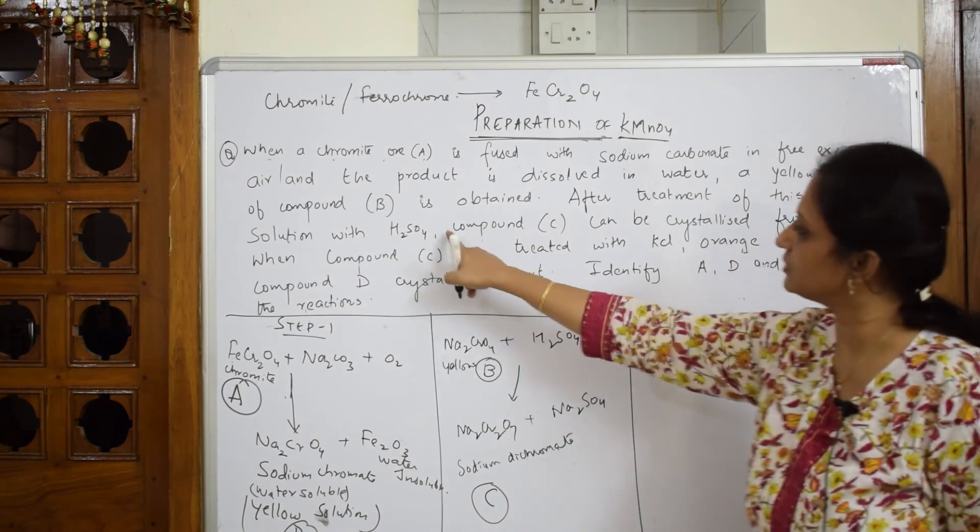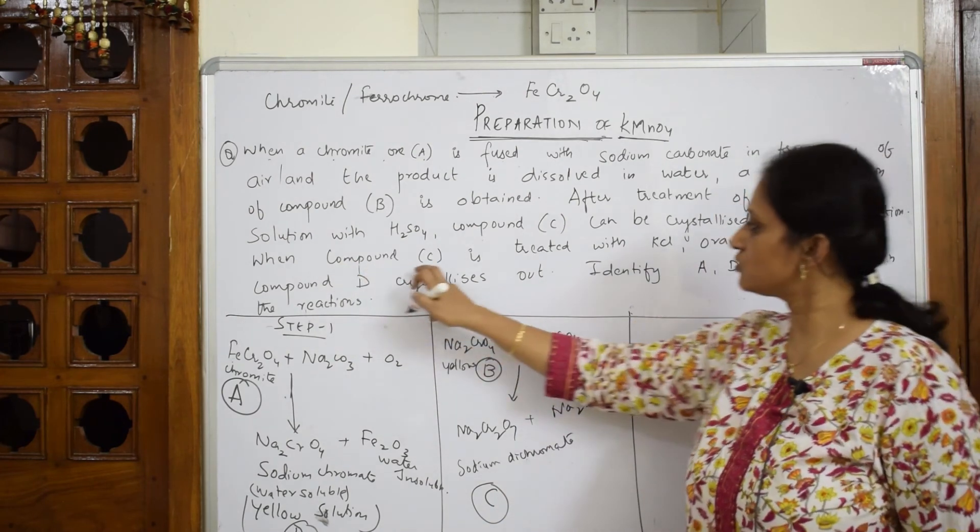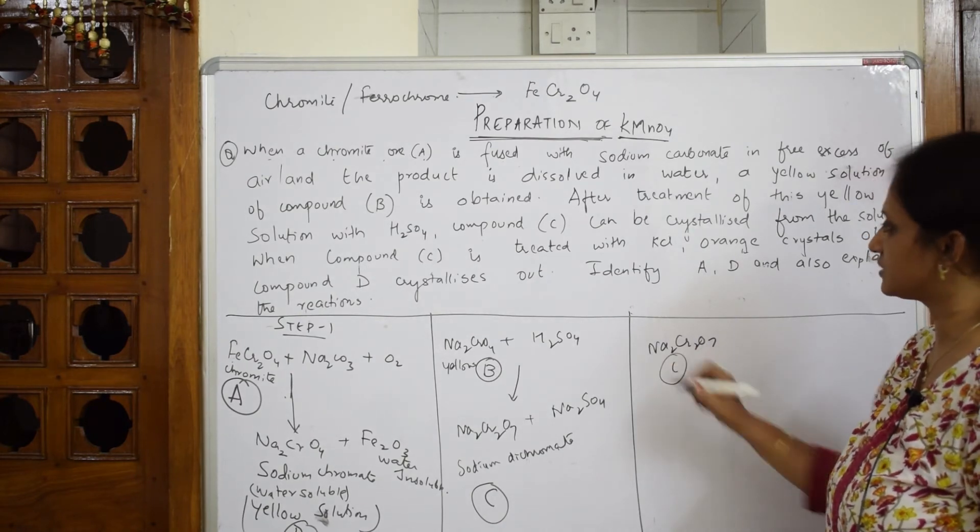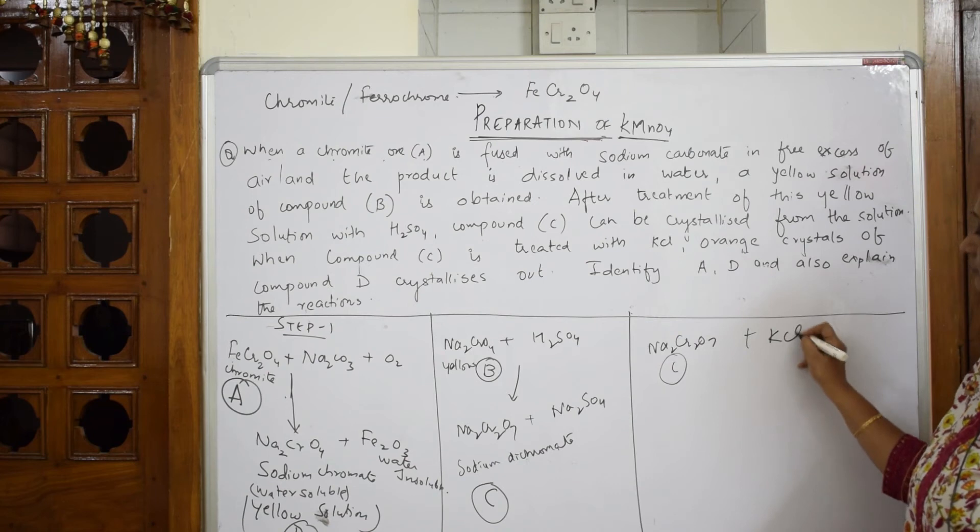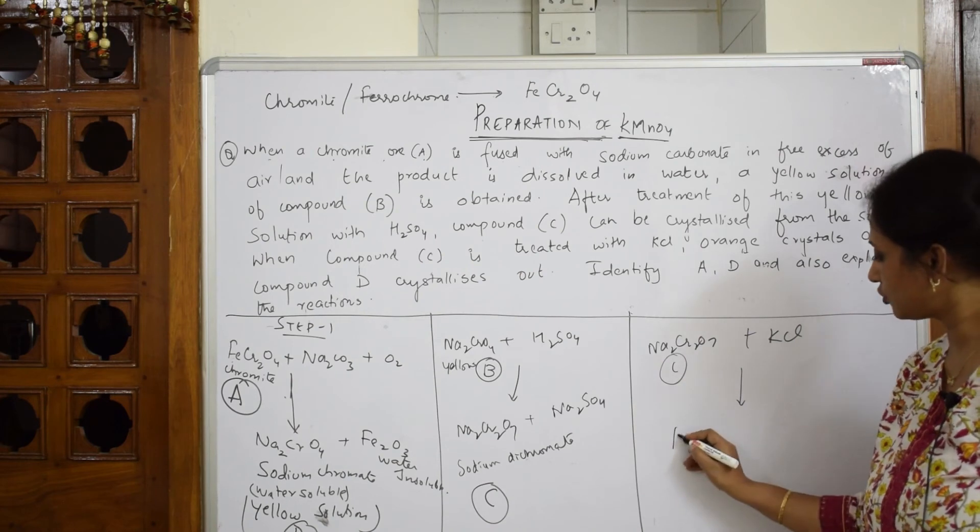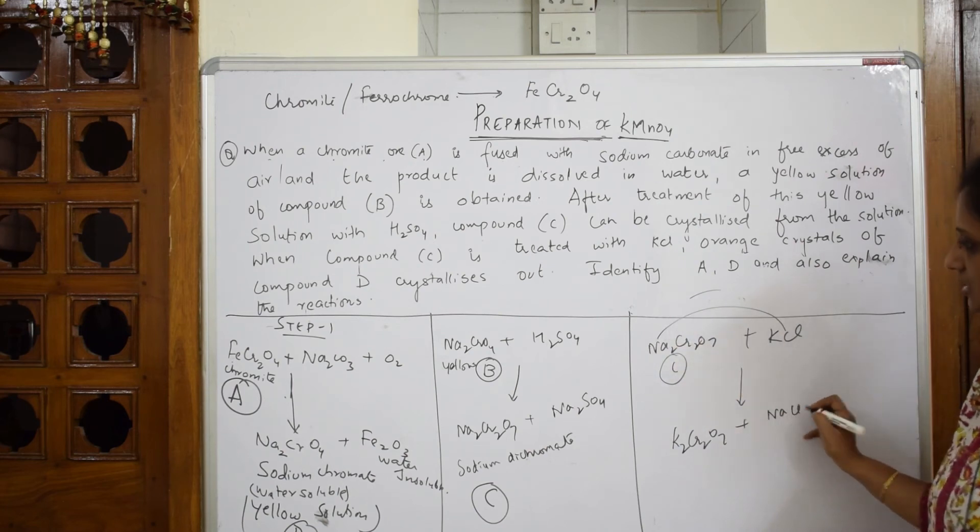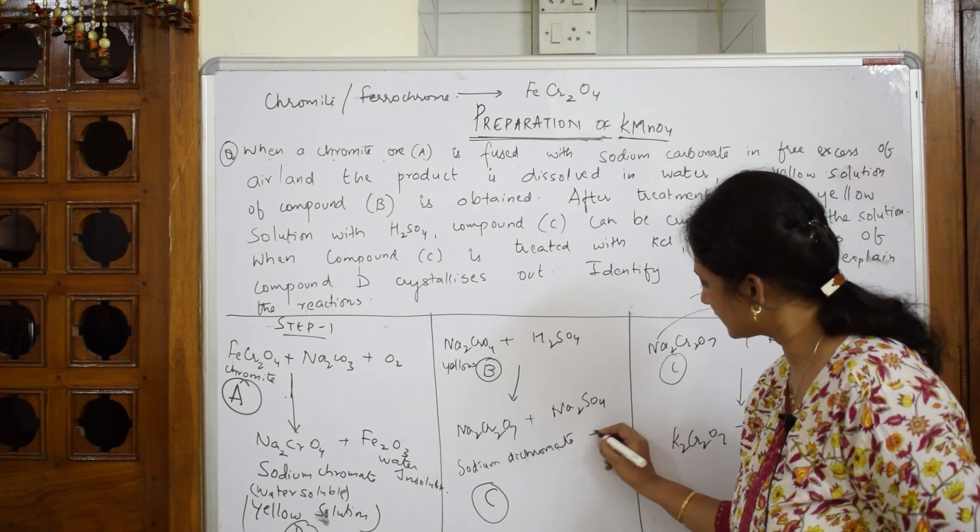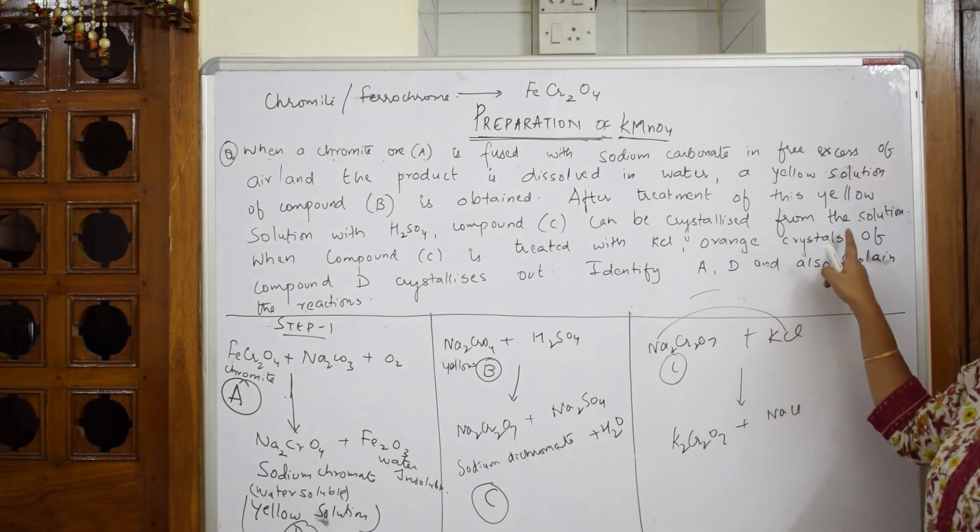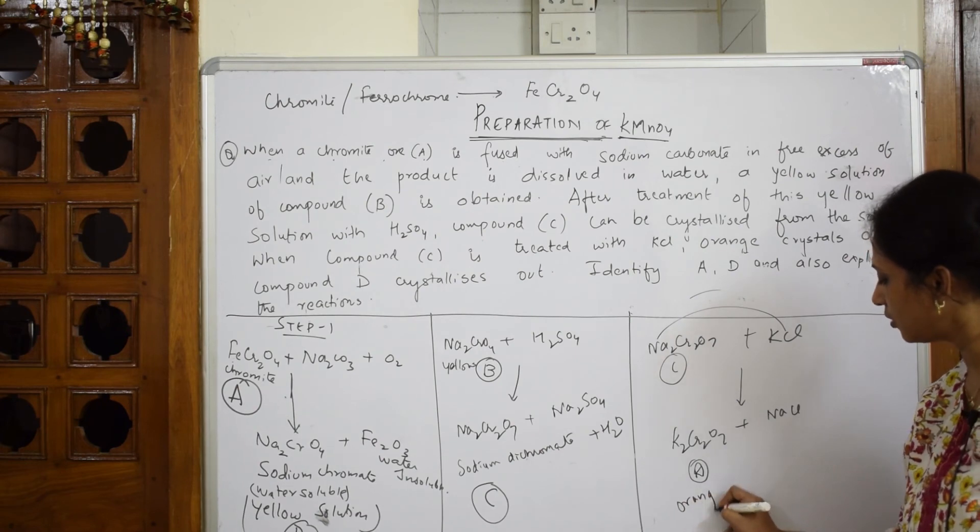You're going to take the same compound B and treat it with sulfuric acid. You get compound C. Take that compound C. Compound C can be crystallized from the solution. When compound C is treated with KCl. Now, take this compound C, Na2Cr2O7. Compound C is treated with KCl. What is KCl doing? KCl is going to replace this sodium now and forms K2Cr2O7 and your NaCl is out. Here, important thing. You also have water extracting. Water also is important. They said compound C is treated with KCl. Orange crystals of compound D are formed. This is your compound D which is an orange crystal.